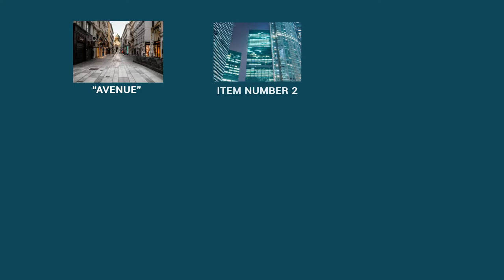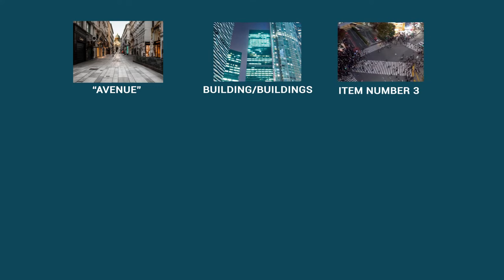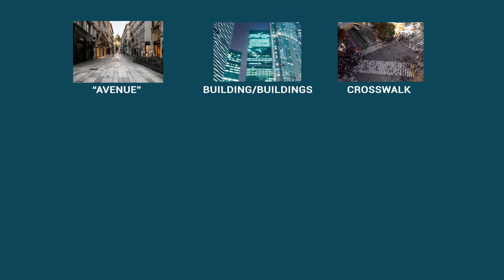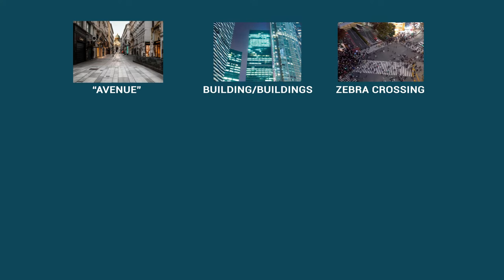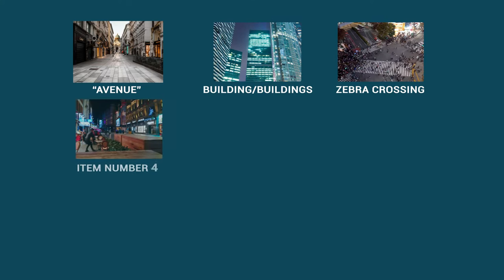Item number two: building or buildings. Item number three: crosswalk. Some people might say zebra crossing because of the stripes. Item number four: restaurant.